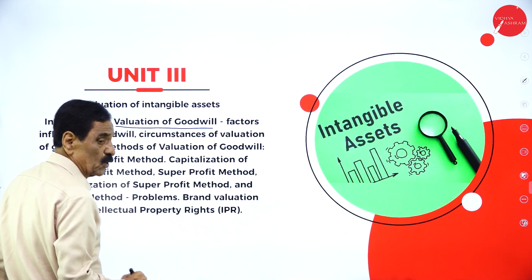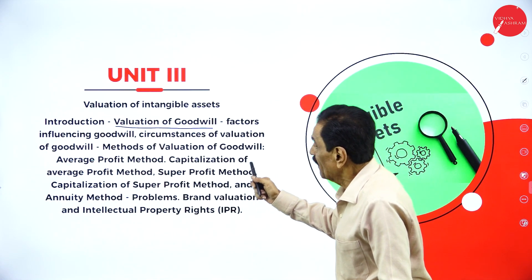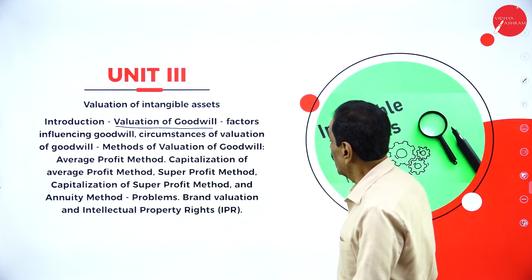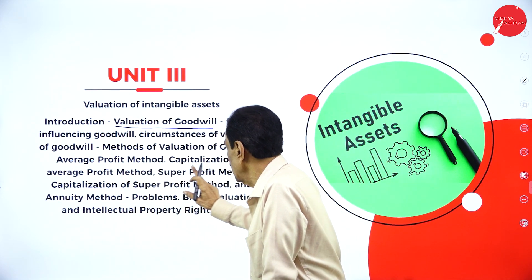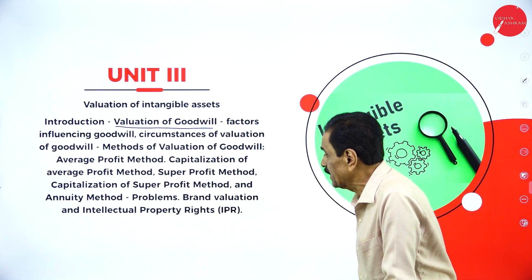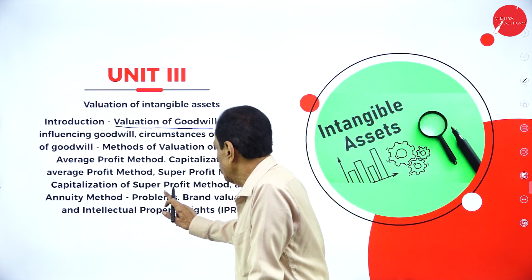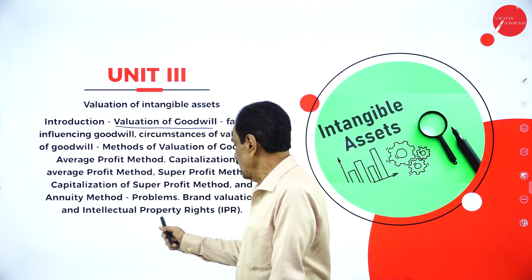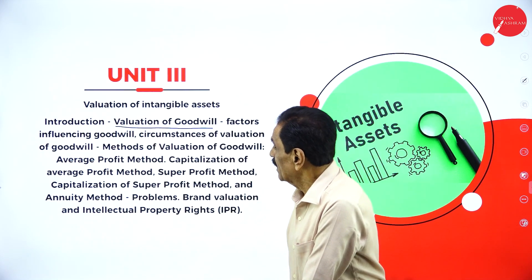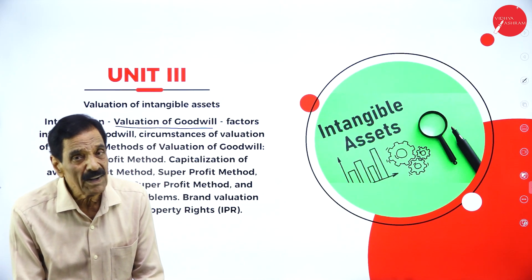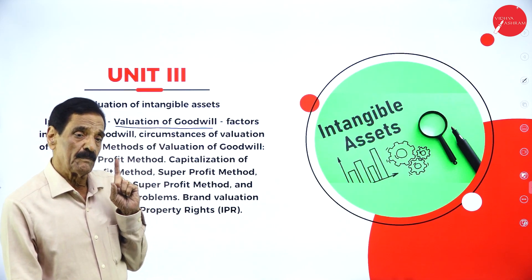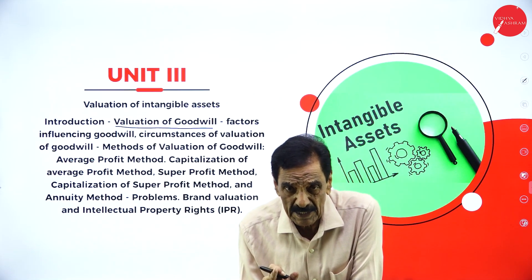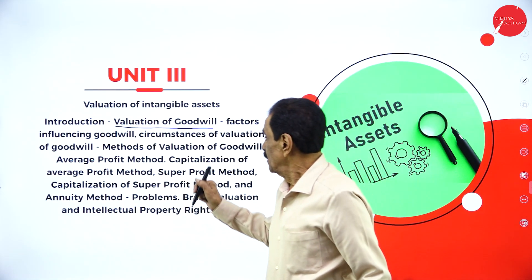Intangible assets include goodwill, trademarks, and patents. Topics covered: factors influencing goodwill, circumstances of valuation of goodwill, and methods of valuation — Average Profit Method, Capitalization of Average Profit Method, Super Profit Method, Capitalization of Super Profit Method, and Annuity Method — along with brand valuation and intellectual property rights. Here, one problem will be asked in Section B for 10 marks.